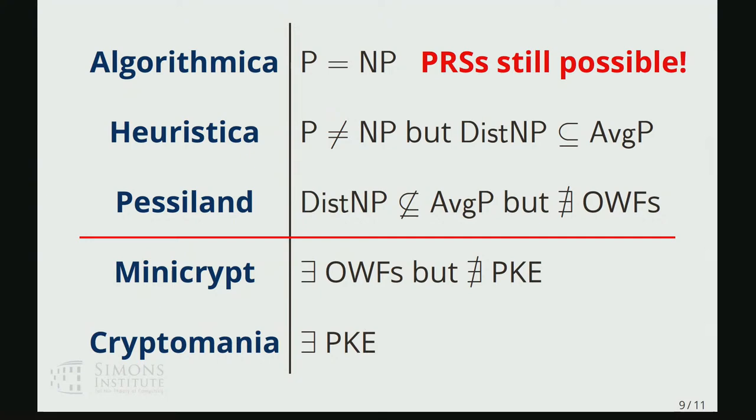where classically, super polynomially secure cryptography is unthinkable anywhere above this line. Quantumly, it's actually consistent with our knowledge that you could still have secure quantum cryptography based on pseudorandom states all the way up here, which is pretty remarkable.